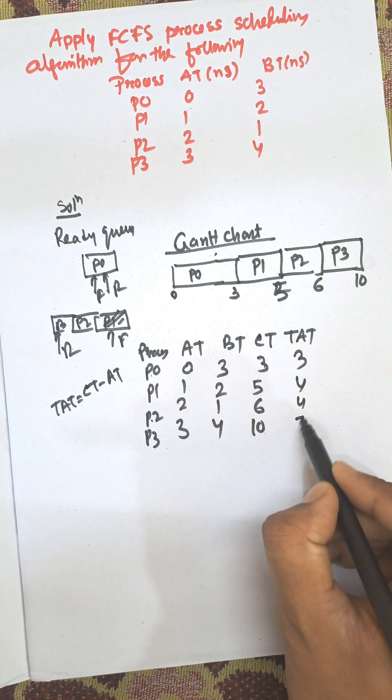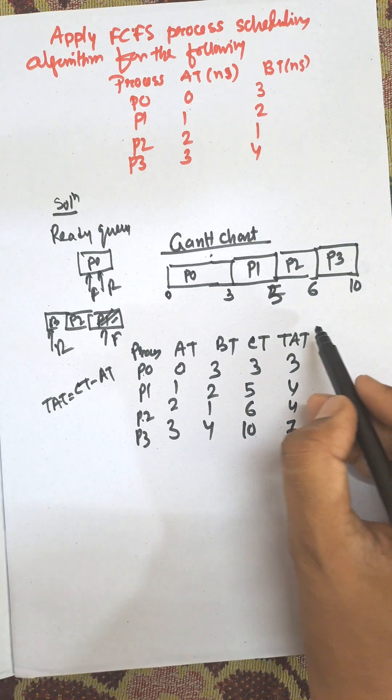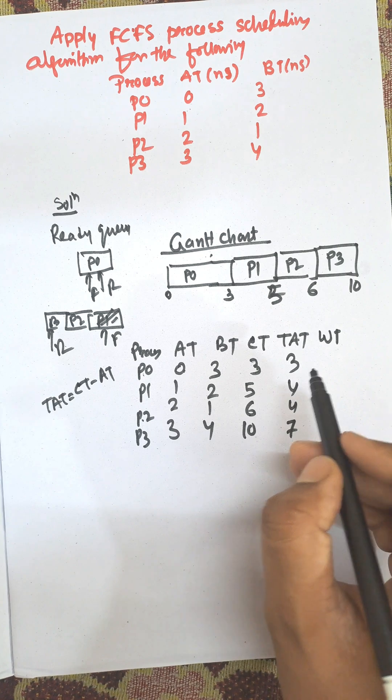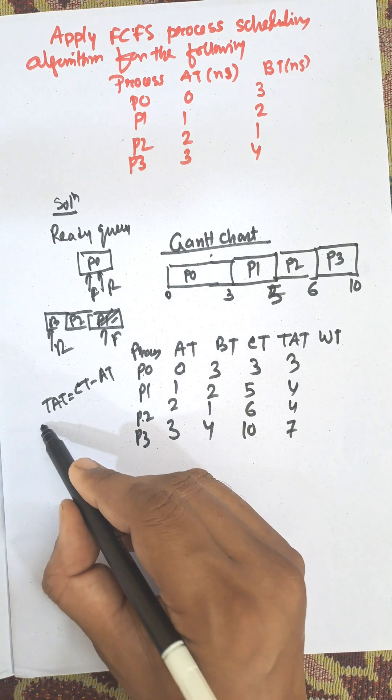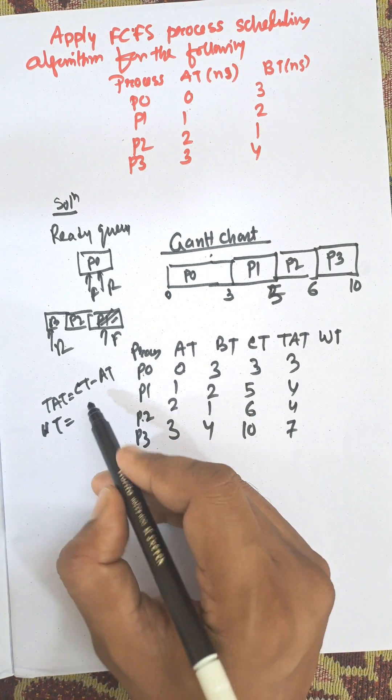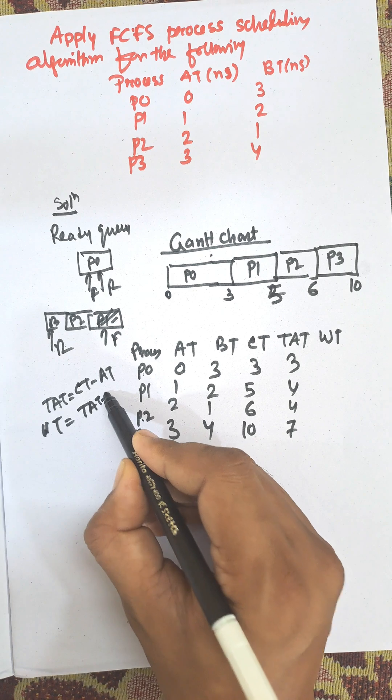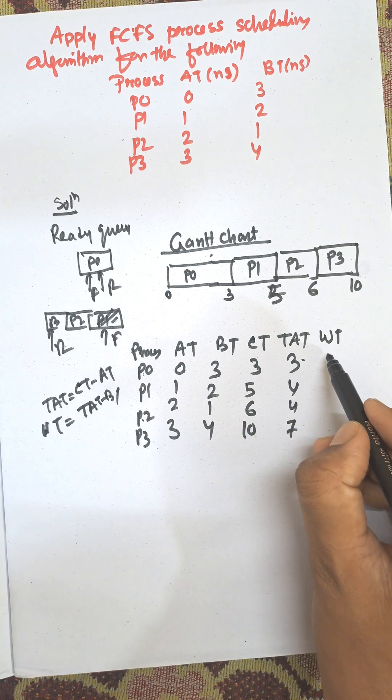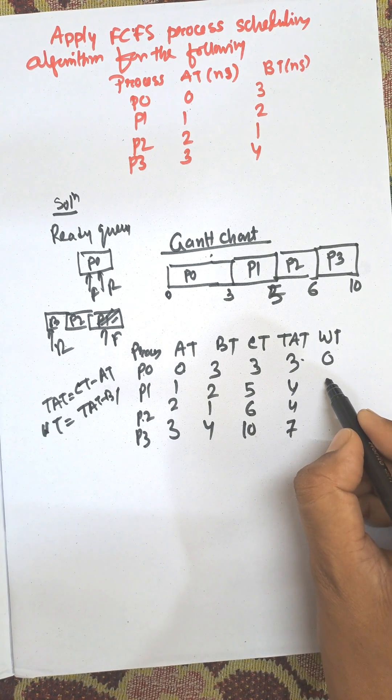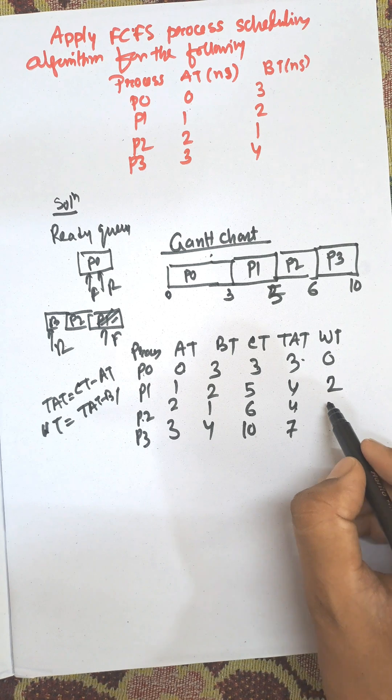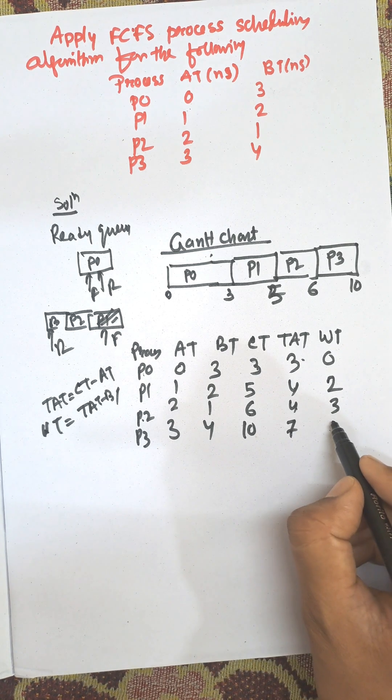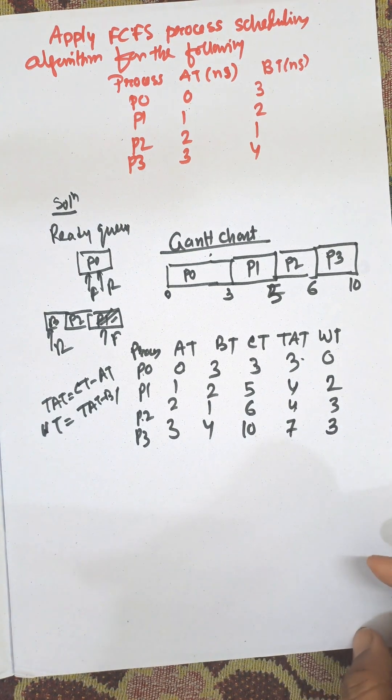Now waiting time is the most important. Waiting time is turnaround time minus burst time. 3 minus 3 equals 0. 4 minus 2 equals 2. 4 minus 1 equals 3. 7 minus 4 equals 3. So these are the waiting times.